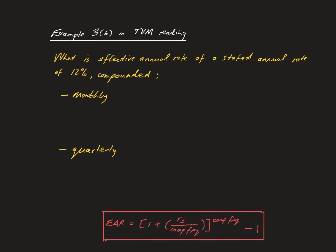This is a discussion of parts of Example 3b in the Time Value of Money reading. It is all about the conversion of stated annual rates with different compounding periods to an effective annual rate, something that we have seen in previous videos is needed because of the lack of comparability of stated annual rates which have different compounding periods.